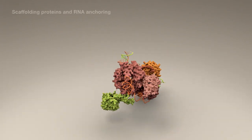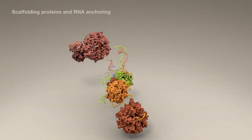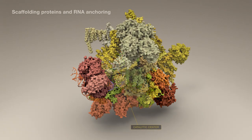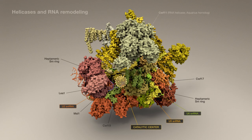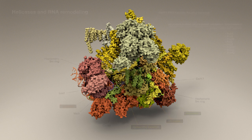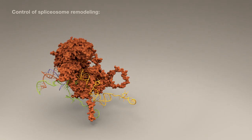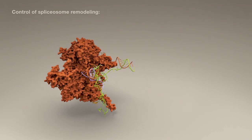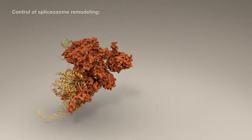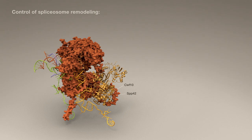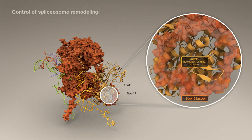Besides scaffolding proteins, which function to anchor RNA at or away from the catalytic cavity, the spliceosome recruits RNA helicases, which remodel RNA in 3D space. Consider the central scaffolding protein SPP42, as it lassos over the nucleotide domain of the sole spliceosomal GTPase switch, functioning as a molecular clock, controlling helicase activity central to spliceosomal assembly and disassembly.